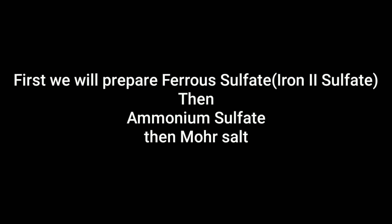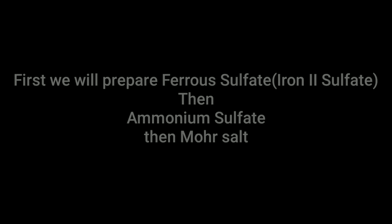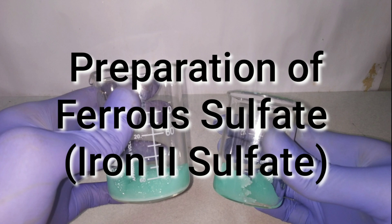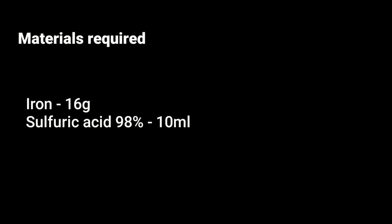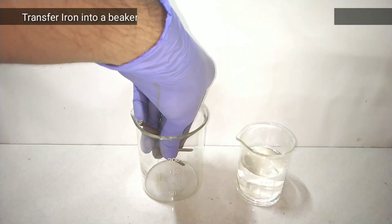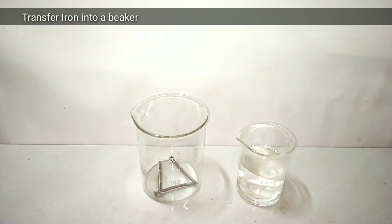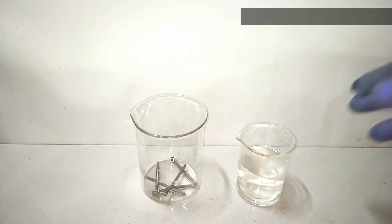In this video we will be preparing iron 2 sulfate, then ammonium sulfate, and finally the Mohr salt. First let's prepare iron 2 sulfate. For this I need some iron. Here I am using iron nails and some sulfuric acid. First I transfer the iron nails into a 250 ml beaker.